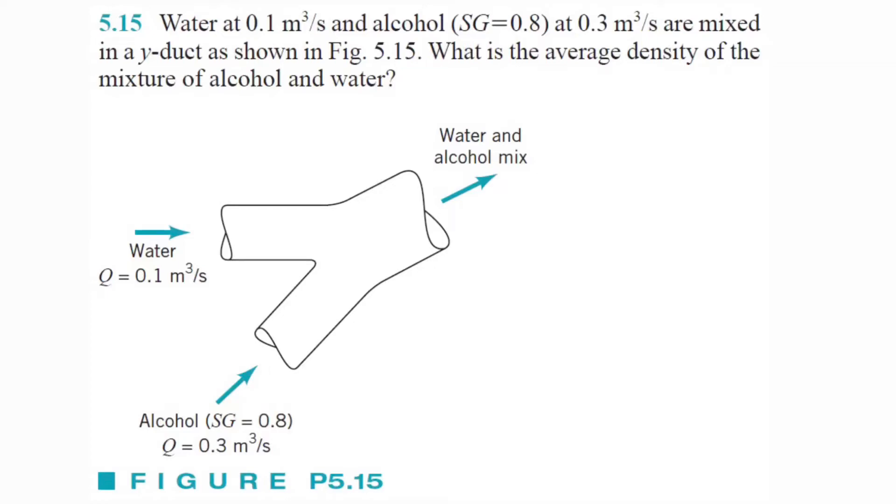Alright, so we got a mass conservation problem. This one reads water at 0.1 meters cubed per second and alcohol with a specific gravity of 0.8, and that one's flowing at 0.3 meters cubed per second are mixed in a y-duct. So now we're looking for the average density of the mix between alcohol and the water. So let's get started.